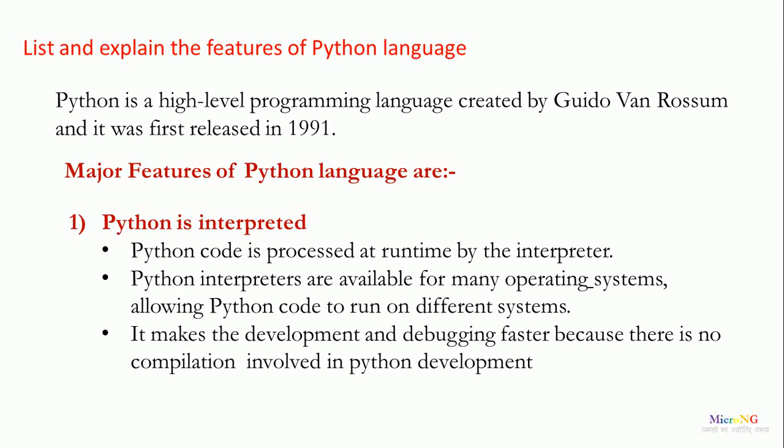Hello, this tutorial is to explain the various features of Python language. Python is a high-level programming language created by Guido Van Rossum and it was first released in 1991. Let us see the various features of Python language.